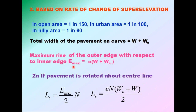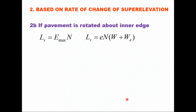There are two cases. Case one: when the pavement is rotated about the center line, the length of transition is Ls = (e × n × (W + W_e)) / 2, where e is the super elevation, n is the rate of change of super elevation, W_e is the extra widening, and W is the pavement width — divided by 2 because the pavement is rotated about the center line. Case two: when the pavement is rotated about the inner edge, Ls = e × n × (W + W_e).